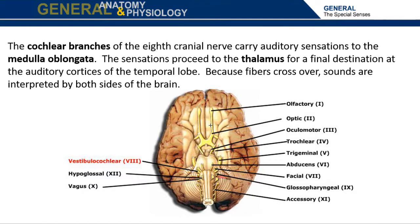The cochlear branches of the eighth cranial nerve carry auditory sensations to the medulla oblongata. The sensations proceed to the thalamus for a final destination of the auditory cortices of the temporal lobe. Because fibers cross over, sounds are interpreted by both sides of the brain.